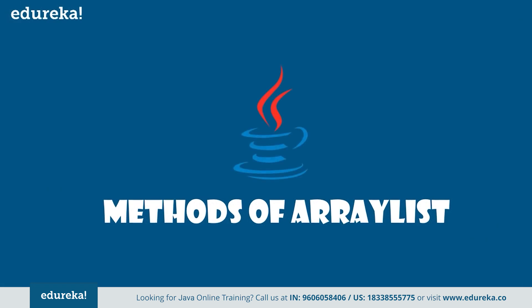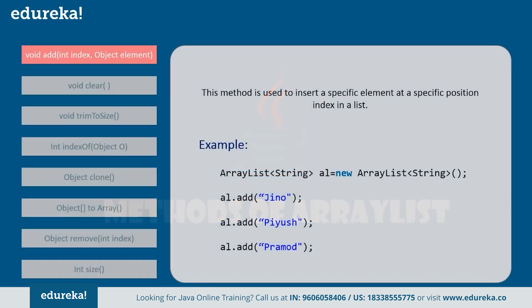Now let's dive into the various methods supported by ArrayList. The first is the add method. This method is used to add elements to the ArrayList — that is, it is used to insert a specific element at a specific position index in a list. For example, you can create an ArrayList and go on adding elements using the add method. We will demonstrate and see all the ArrayList methods in Eclipse after knowing the concepts.